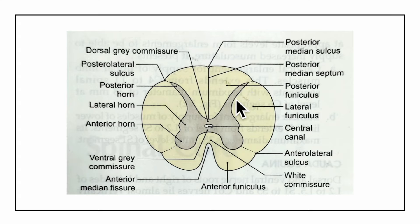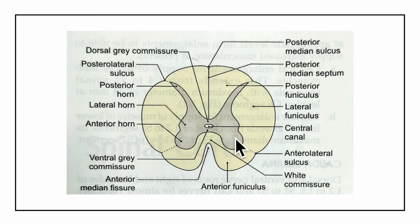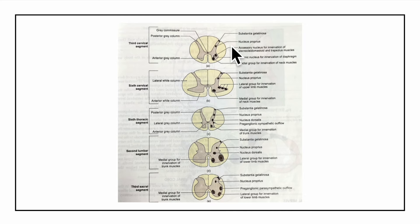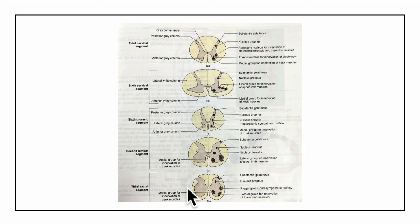The dorsal or posterior horn is found at all spinal cord levels and is comprised of sensory neurons that receive and process incoming somatosensory information from the peripheral areas of the body. The ventral or anterior horn comprises motor neurons that innervate the skeletal muscles. The shape and size of the horns differ at different segments due to functional reasons, as can be seen at the cervical, thoracic, lumbar, and sacral levels in the cross-section diagram.